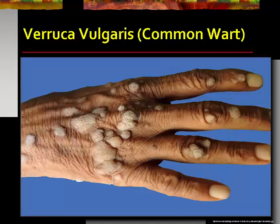Verruca vulgaris, known as the common wart, is a small, fleshy, grainy bump that is flesh-colored, white, pink, or tan, and rough to the touch. Warts are tiny skin infections caused by viruses of the human papillomavirus family. Although children get warts most often, teens and adults can get them too. Some warts are sexually transmitted and appear in the genital area, but most affect the fingers, hands, and feet. Some people appear more susceptible due to immune system differences. The virus passes by close physical contact, and tiny cuts or scratches increase vulnerability. The most common treatments are salicylic acid and cryotherapy.